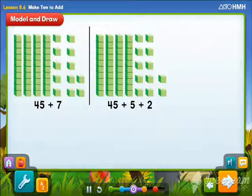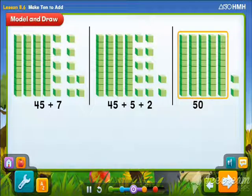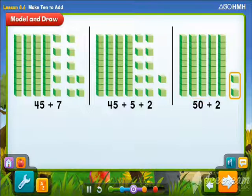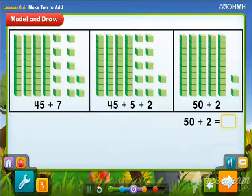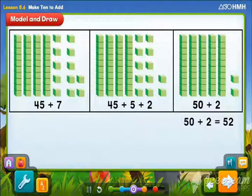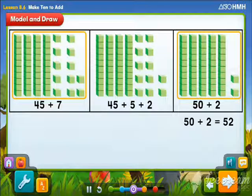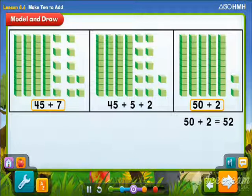Now, add the 5 ones from 45 with the 5 ones from 7 to make a 10. The model now shows 5 tens and 2 ones. What is the sum of 50 and 2? It's 52. These models show the same amount.